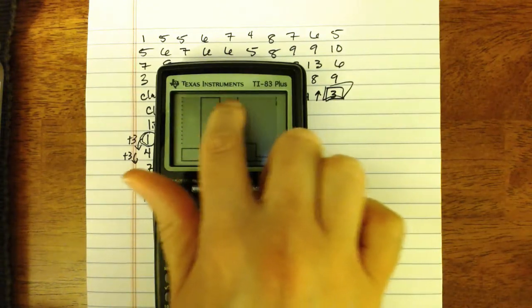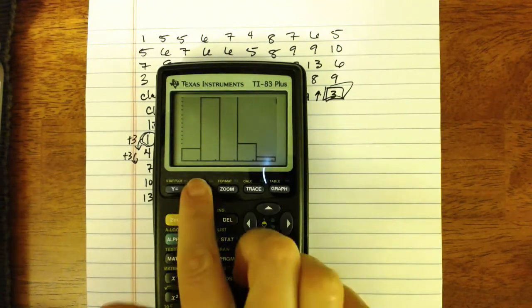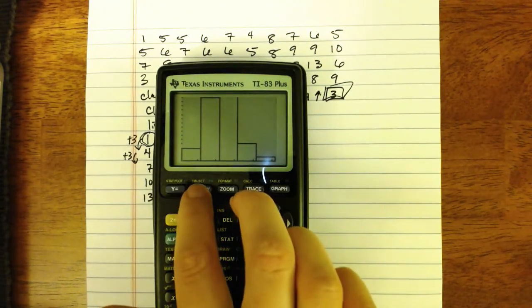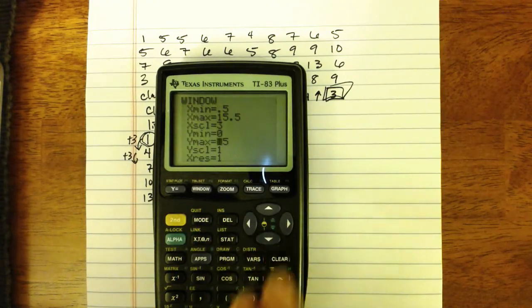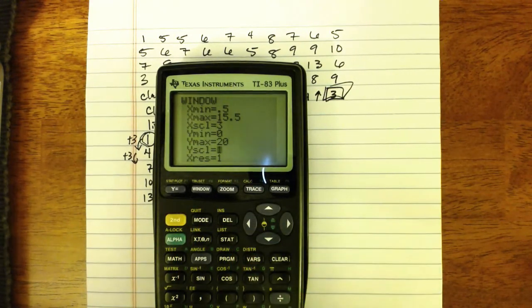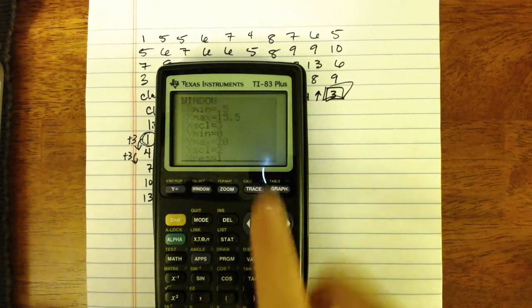Nope, still not high enough. Look at that. It's still cutting off one of my bars. So I'll press window. Now maybe I'll do 20. And maybe now I'm going to change my Y scale to going up in increments of 2.